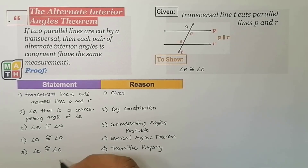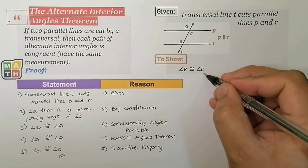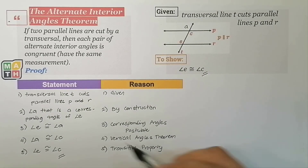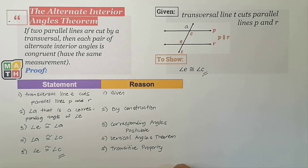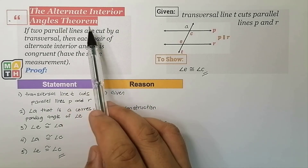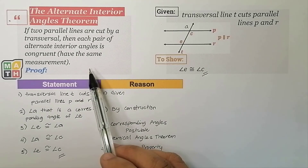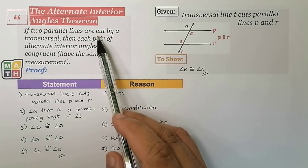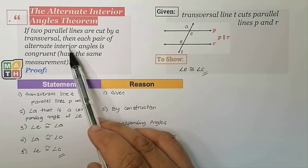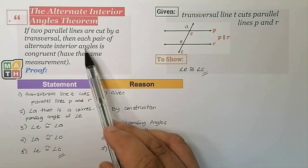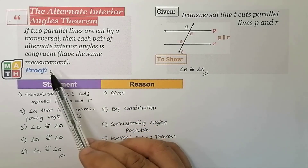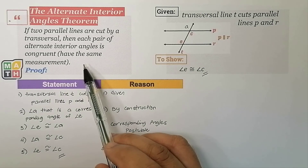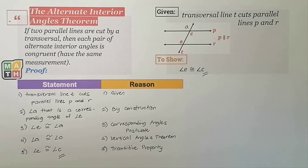We have reached our intended outcome using the given situations. This is one of the possible proofs for the Alternate Interior Angles Theorem, which tells us that when two or more parallel lines are cut by a transversal, each pair of alternate interior angles is congruent or has the same measure.